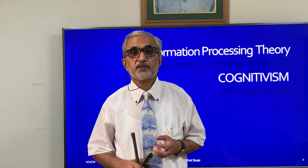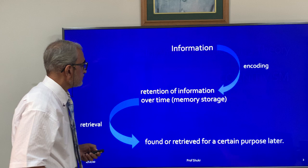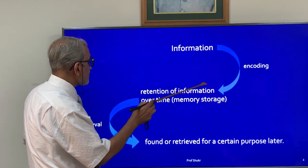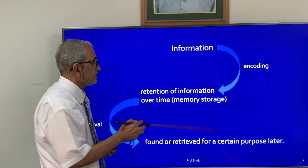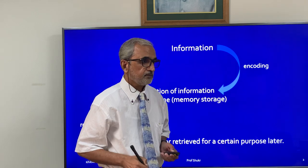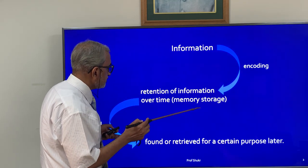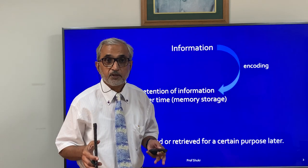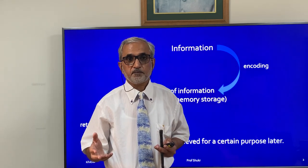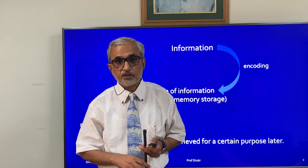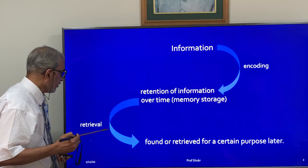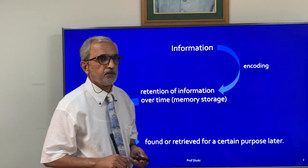We are talking about the memory system in the brain. Whatever information comes to us through our senses, the retention of that information over time occurs by means of a process called encoding. This information is stored in the memory system, which acts as a storage. When we need information to solve a problem, it is retrieved from the memory system into the awareness of a person.